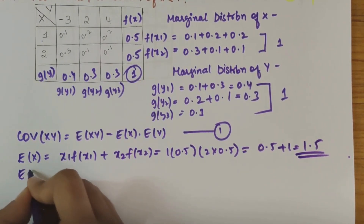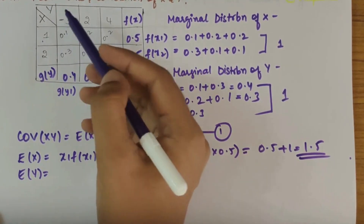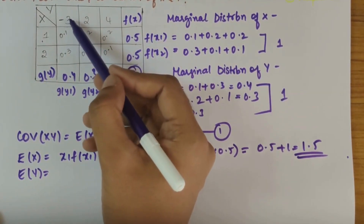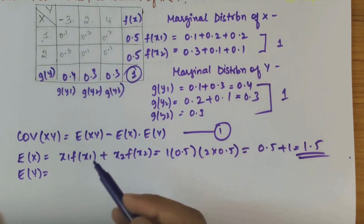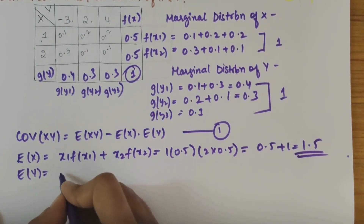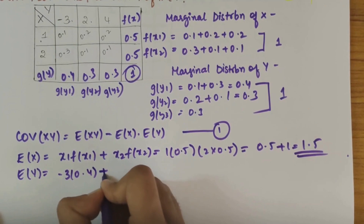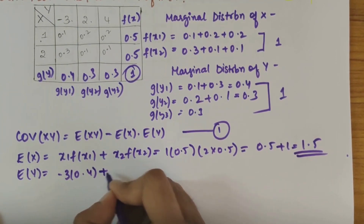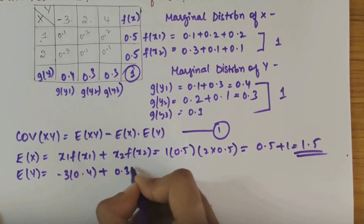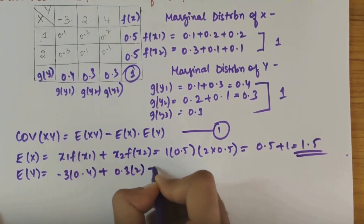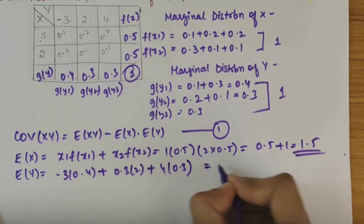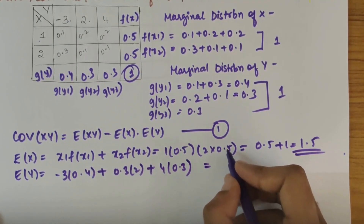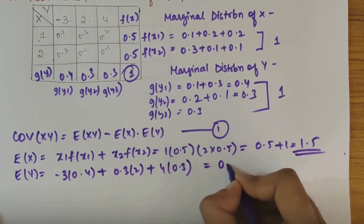Next we have E(y). E(y) would be y1 into g of y1, plus y2 into g of y2, plus y3 into g of y3, that is minus 3 into 0.4 plus 2 into 0.3 plus 4 into 0.3. When we solve this we get 0.6.